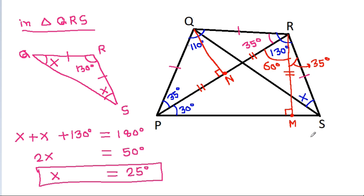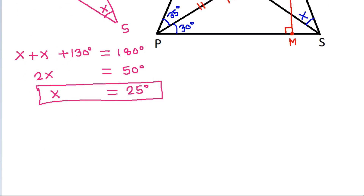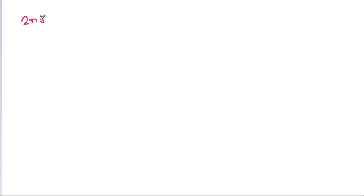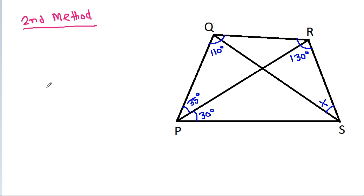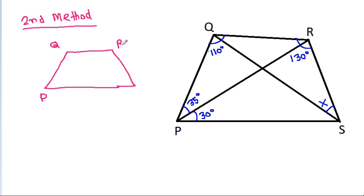And this is the second method. In quadrilateral PQRS, angle QPS equals angle QPR plus angle SPR, that is 35 degrees plus 30 degrees, which equals 65 degrees. Angle PQR is 110 degrees, angle QRS is 130 degrees, and suppose angle PSR is Theta.